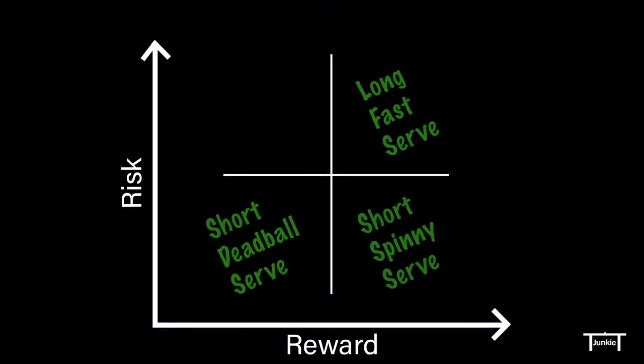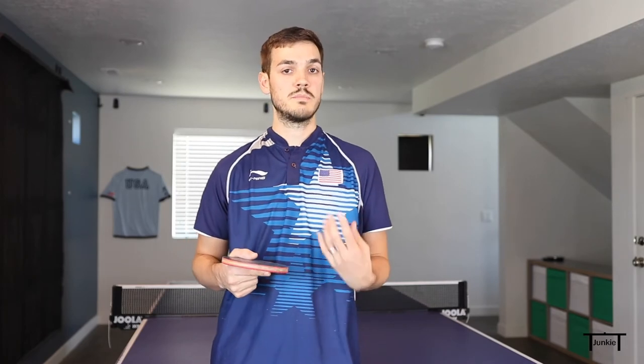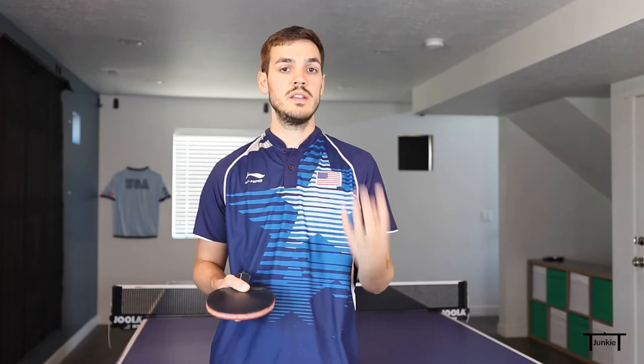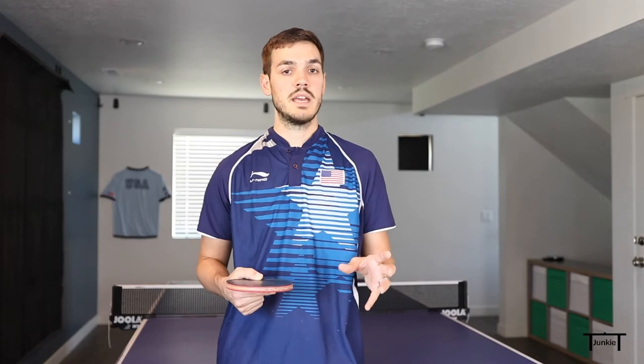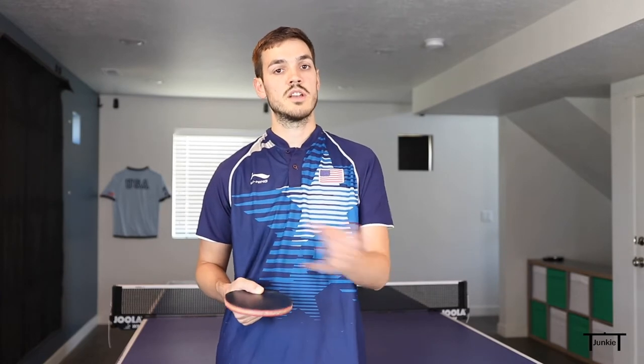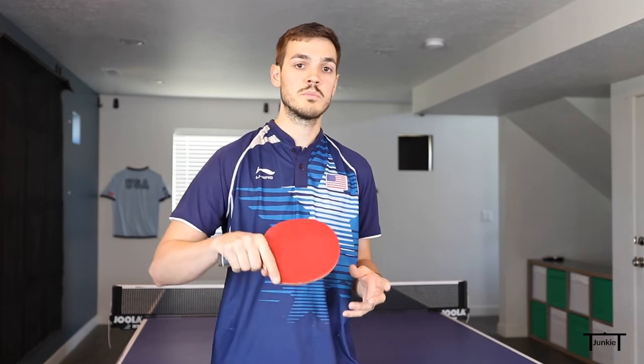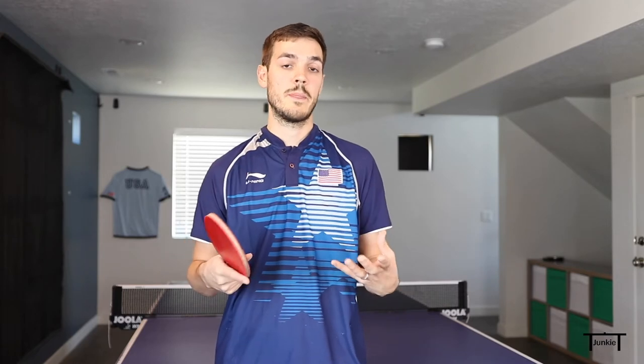Let's talk about low-risk, high-reward serves. This is the category where you want most of your serves to land in because it's going to be tough for your opponent, and you'll get the biggest bang for your buck on these serves. So an example would be a short spinny serve, like maybe a short backspin serve. Because it's short, your opponent won't be able to attack it right off the bat, and because of that spin, your opponent's going to have to read the spin and deal with it — so it's easy to make mistakes. If you have a lot of side spin or a lot of backspin, you can pretty much guarantee that the ball is going to go to one side of the table or the other, and if you have a good backspin, you can narrow your opponent's options down to either a drop shot or a push.